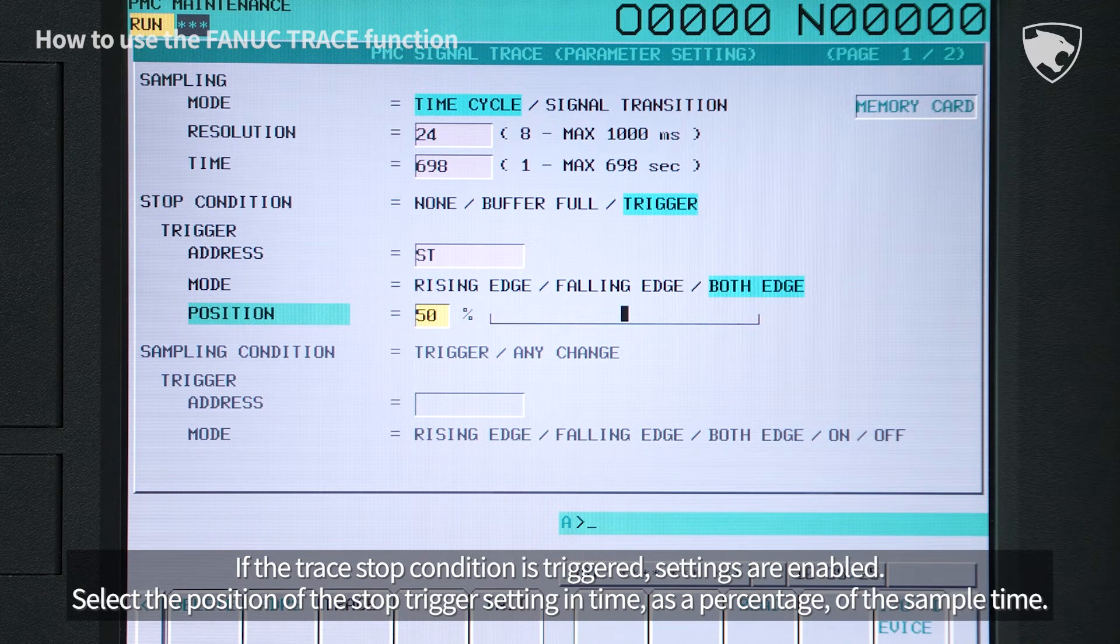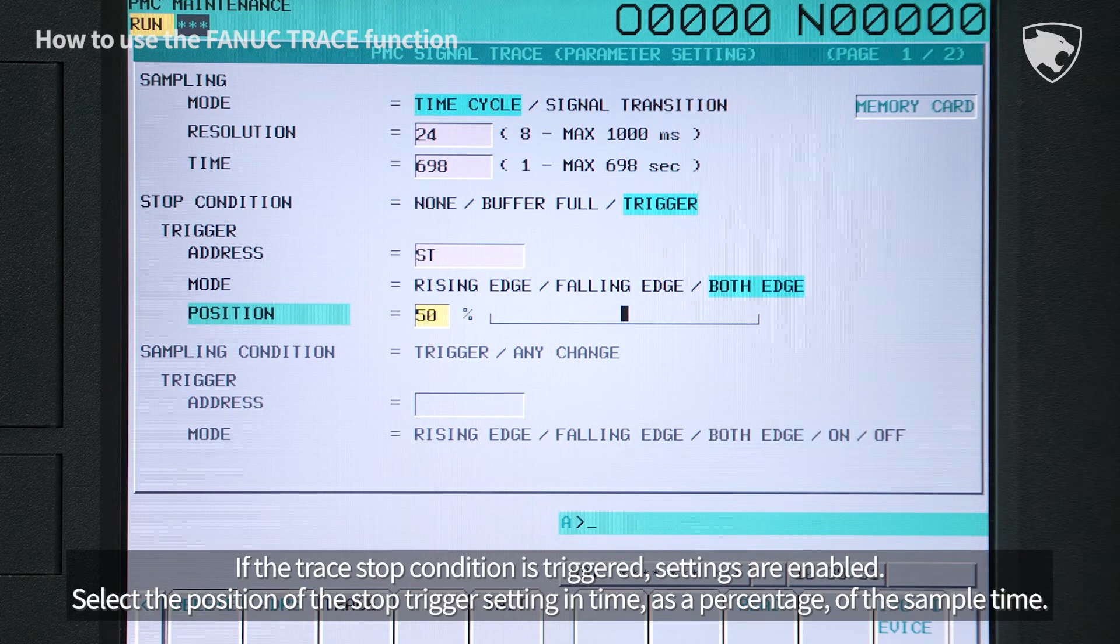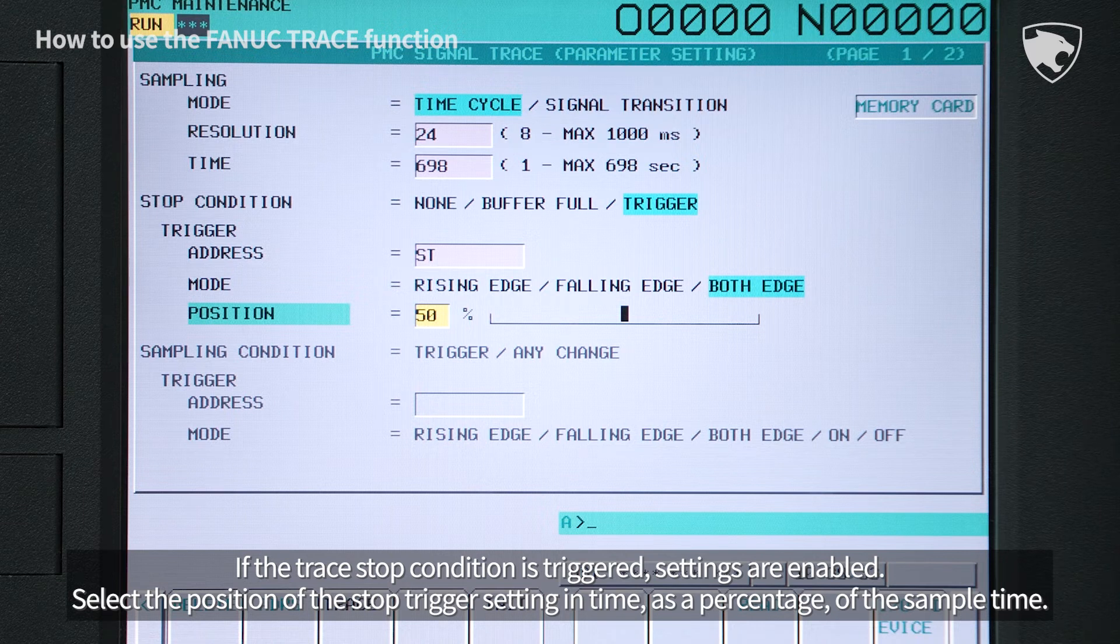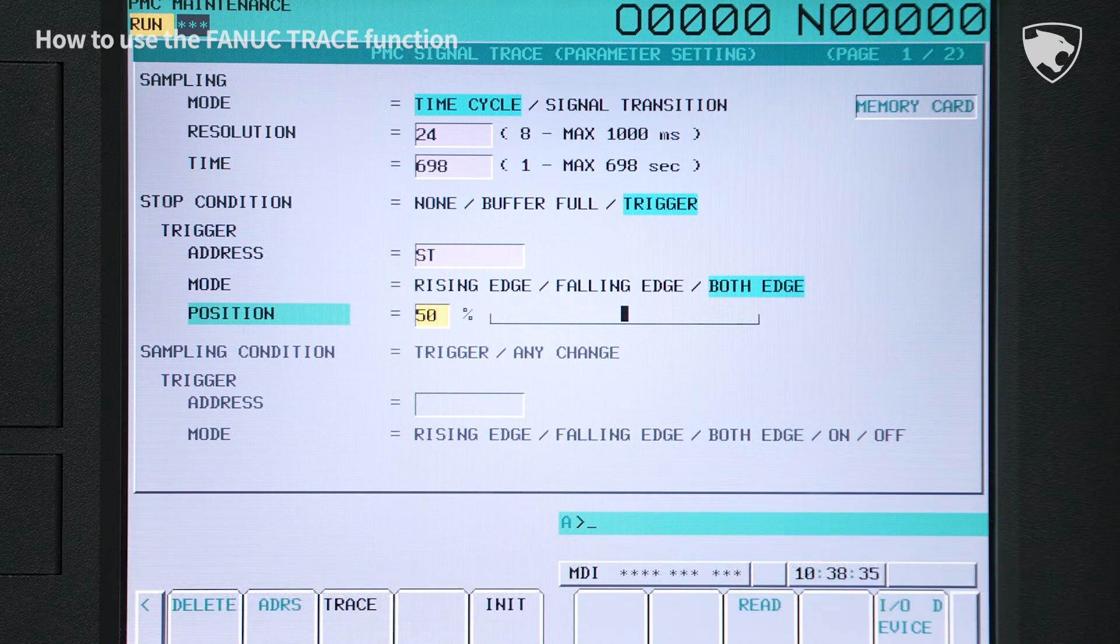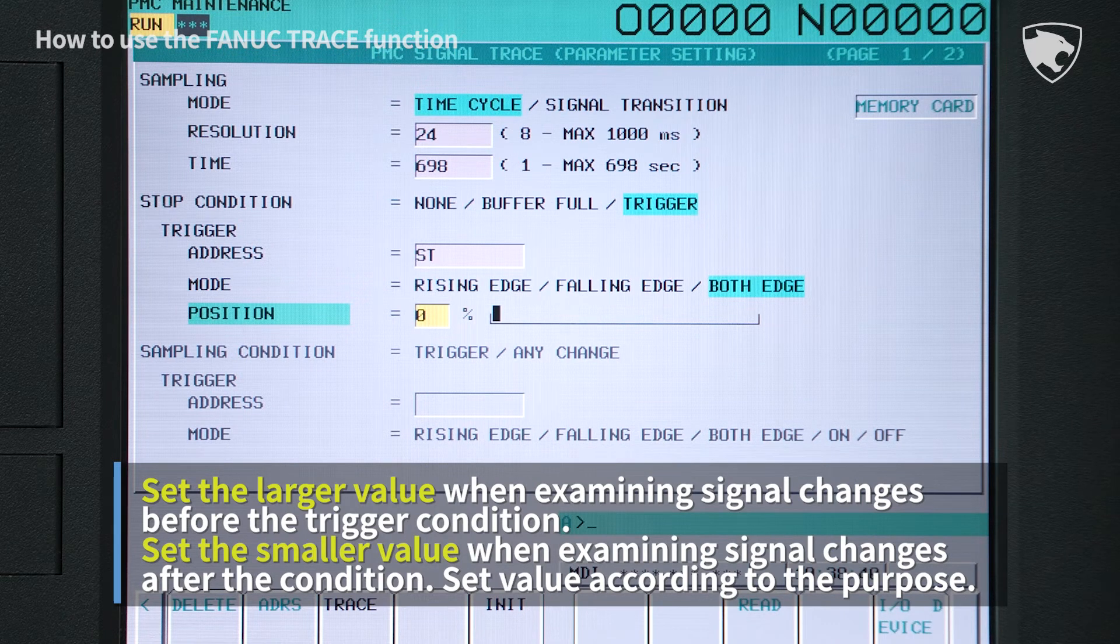If the trace stop condition is triggered, settings are enabled. Select the position of the stop trigger setting in time as a percentage of the sample time. The setting value should be determined according to the application.